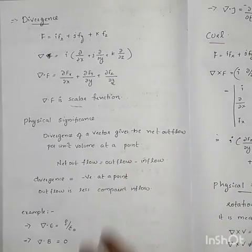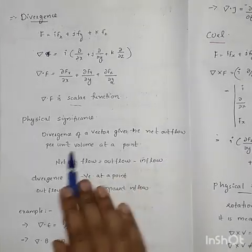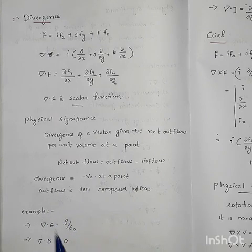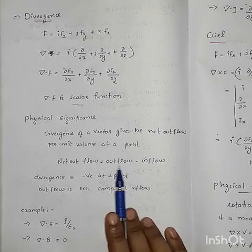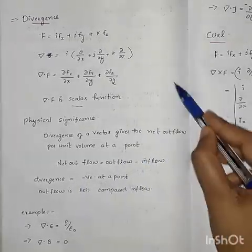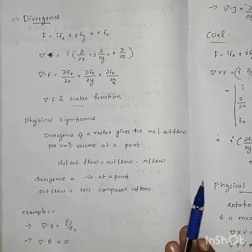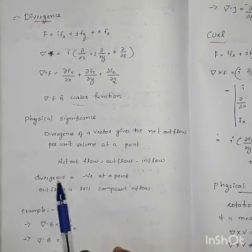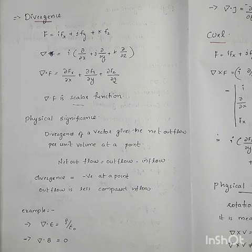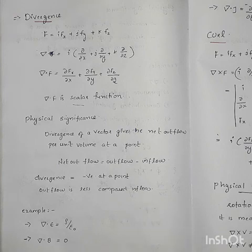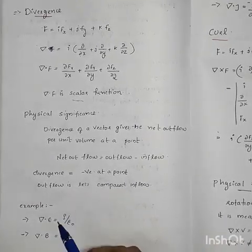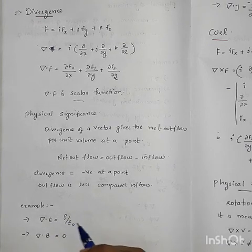Physical significance of divergence: divergence of a vector gives the net outflow per unit volume. If the net outflow is less compared to inflow, divergence is negative. An example is the equation of continuity: del dot E equals rho over epsilon-zero.